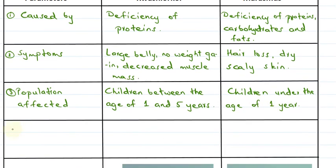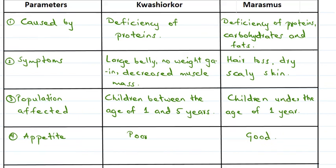The fourth parameter we consider is the type of appetite. In Kwashiorkor, the appetite type is poor, whereas in Marasmus, the children have a good appetite. Let's quickly revise what we have studied.